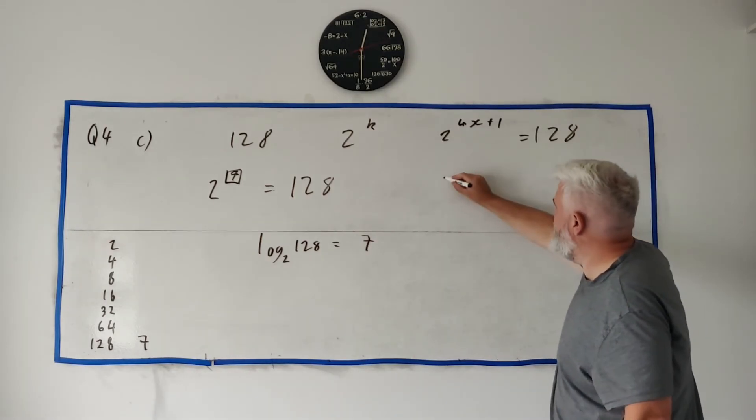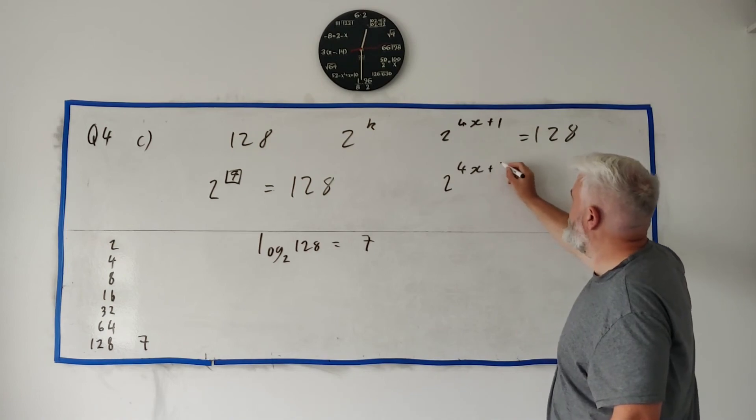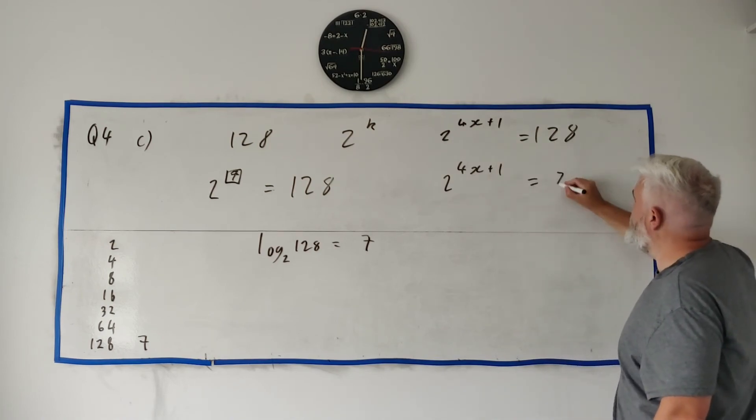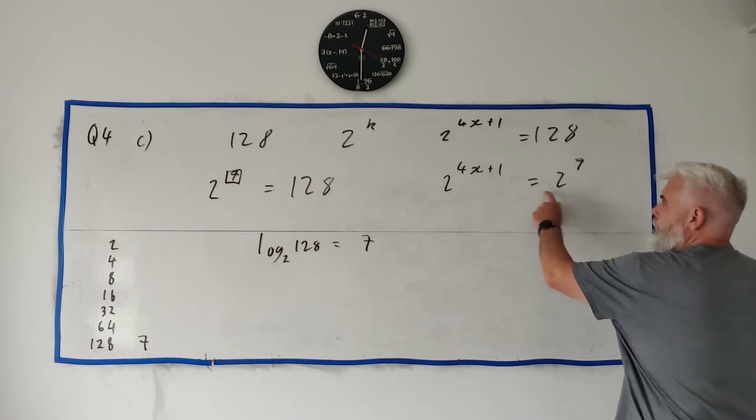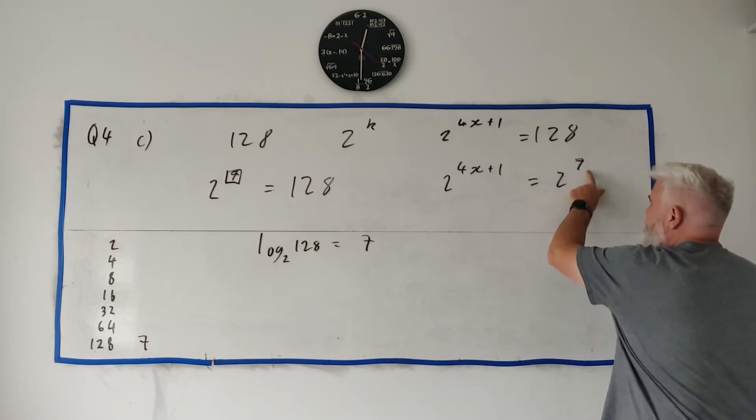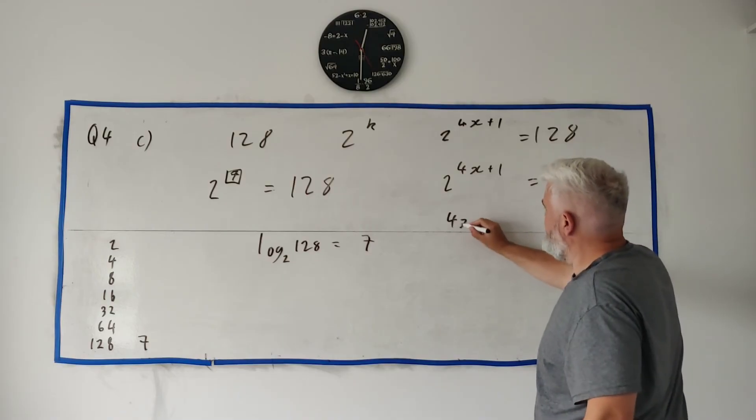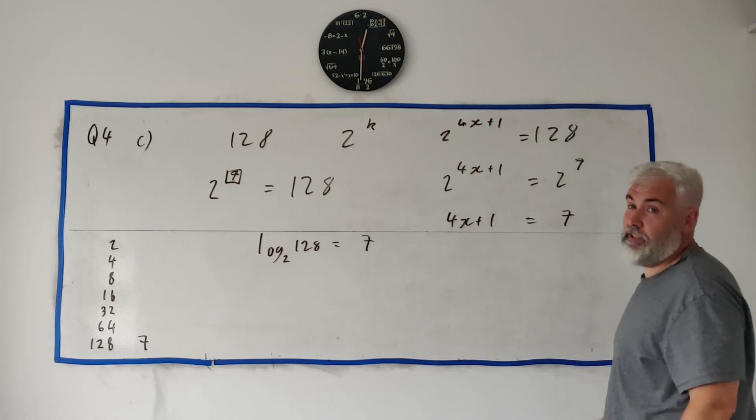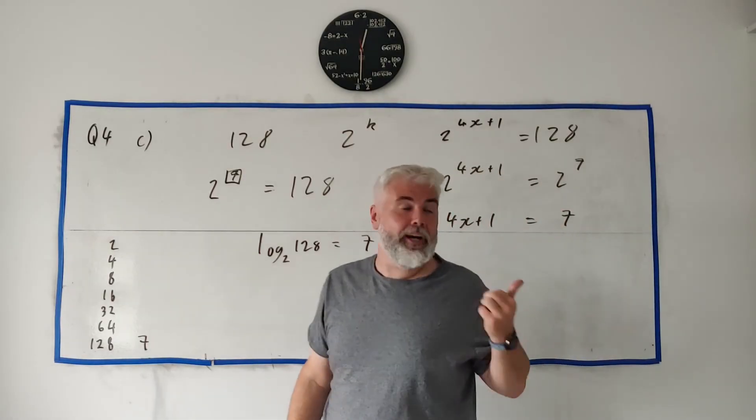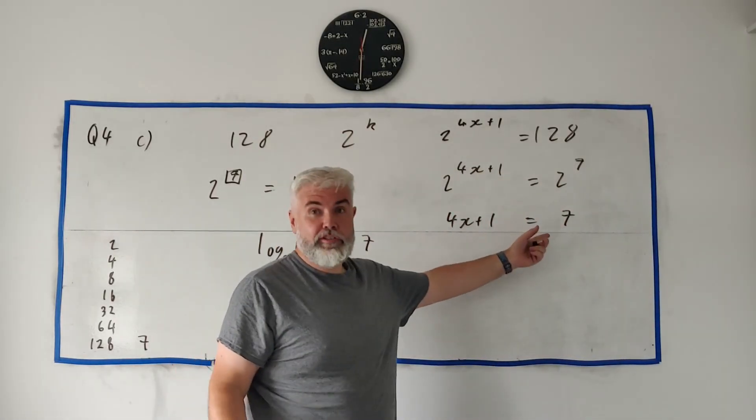So what they want you to do is they want you to notice that 2 to the 4x + 1 is equal to 2 to the power of 7. So 2 to the power of something, 2 to the power of something, really that just means what's up here, 4x + 1, has to equal 7. That's all they want you to do.